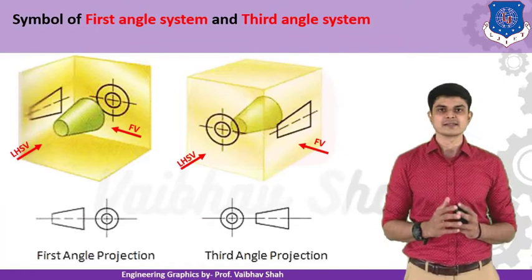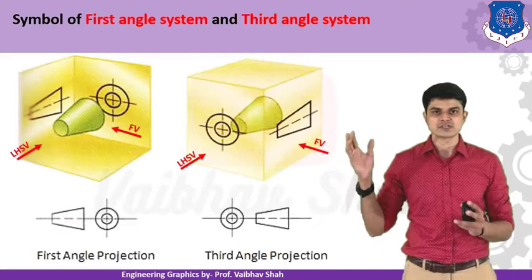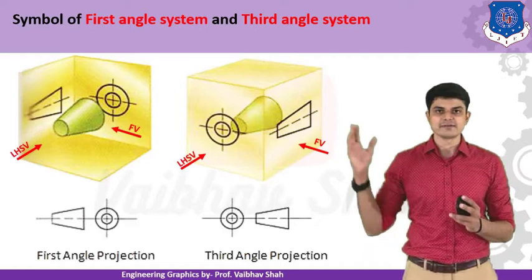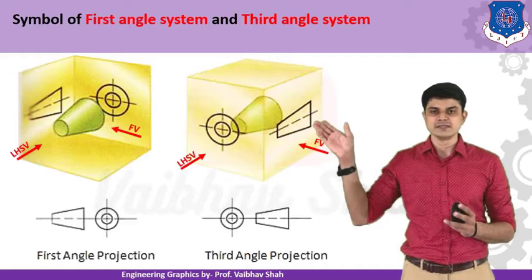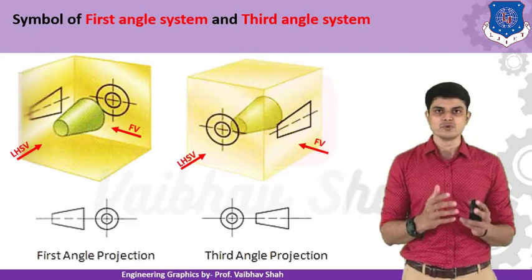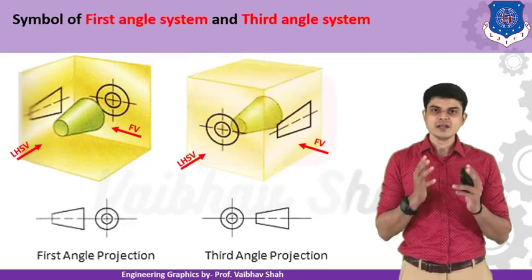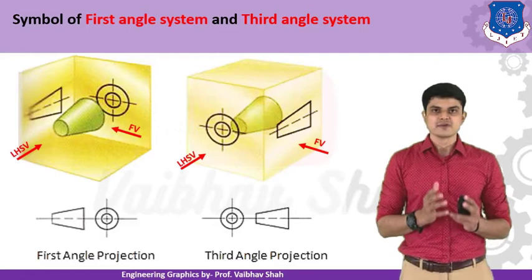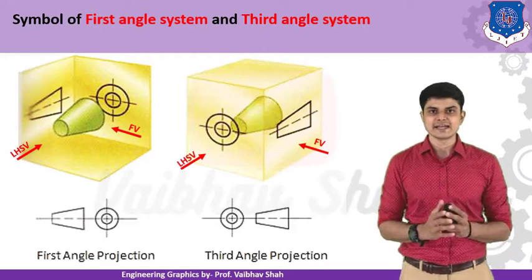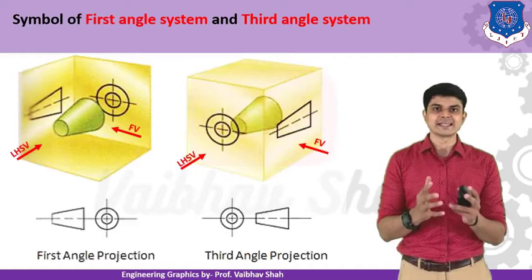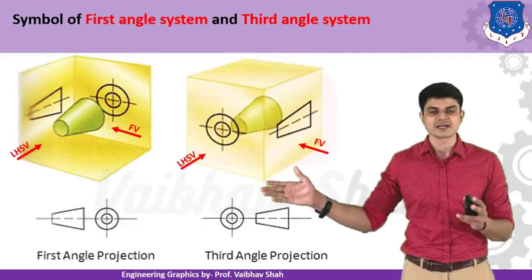Now let us understand the symbols of the first angle and third angle systems. We use a frustum of a cone — a cone cut from the top — as the standard object. I place the frustum in the first quadrant. The front view gives a trapezoidal shape on the vertical plane, and the left-hand side view gives two circles. For the first angle symbol: draw the trapezoidal front view in the center, then the left-hand side view — which are two circles — is drawn on the right-hand side of the front view. This is the first angle symbol.